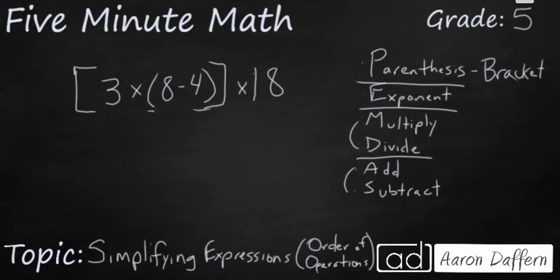So parentheses look like this. Brackets are a little bit more square. So here are our brackets. Think of peanut butter. PB. Always take care of the parentheses first. So here is our parentheses right here. 8 minus 4.